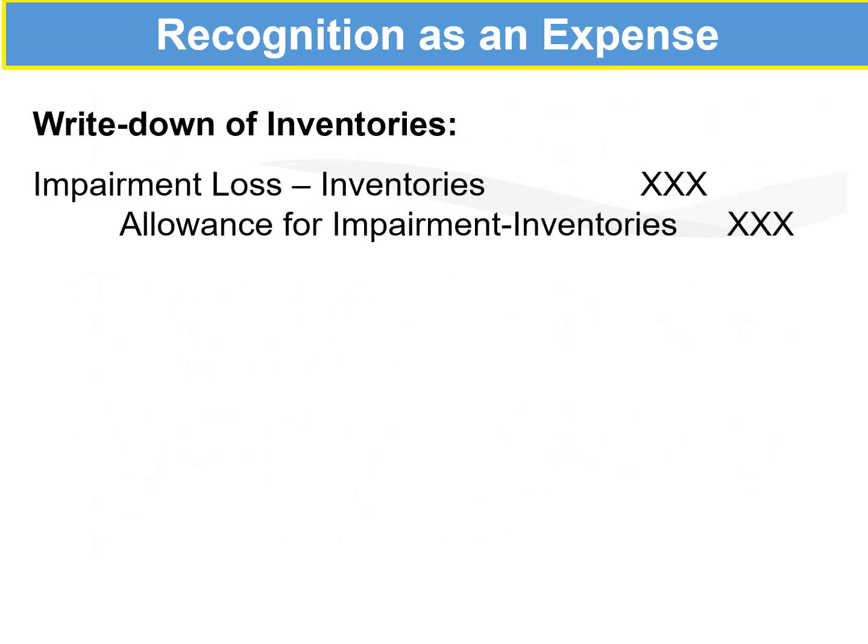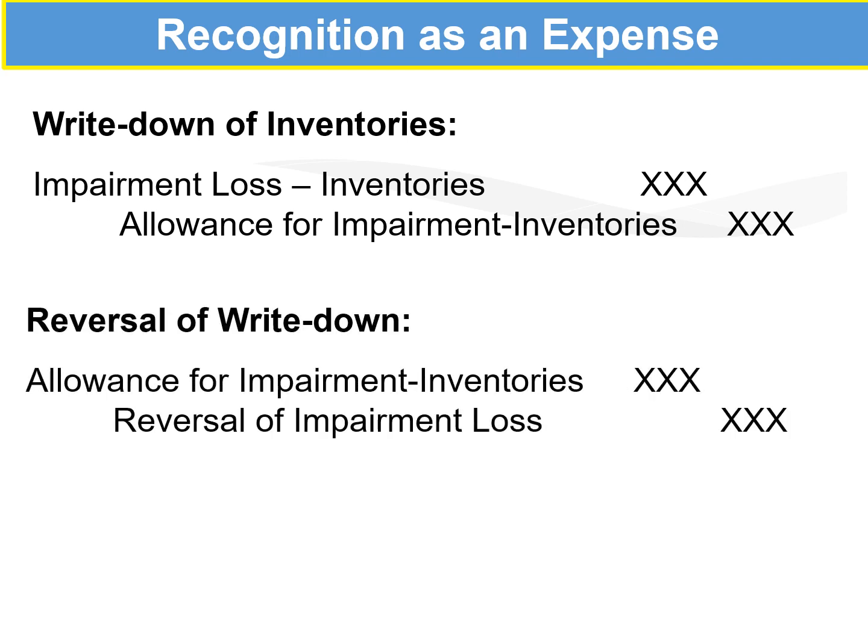The journal entry for write-down is: debit impairment loss on inventory, and credit allowance for impairment loss of inventory. The impairment loss on inventory is a temporary account closed to the income statement. The allowance for impairment of inventories is a balance sheet contra asset account, so we can track any future recoveries. When reversing, we debit allowance for impairment loss and credit reversal on impairment loss. If the reversal occurs in a subsequent year, we credit our equity account instead.